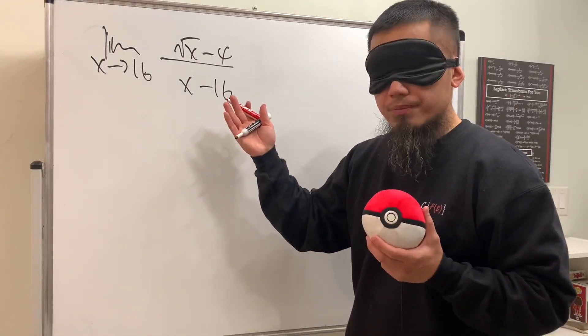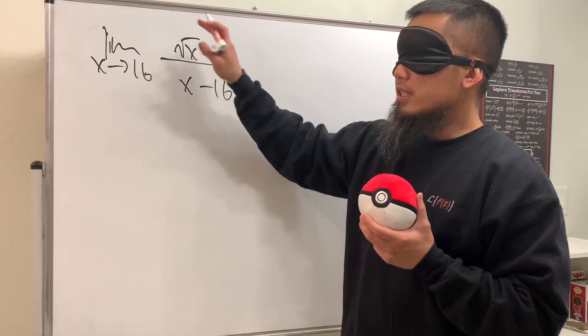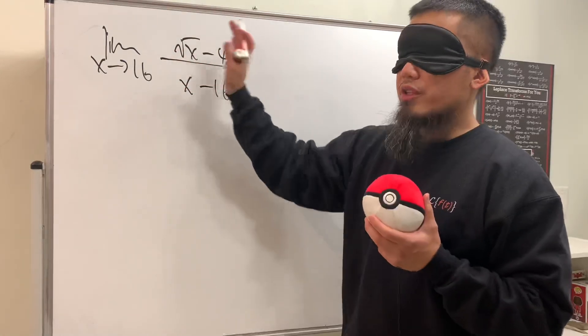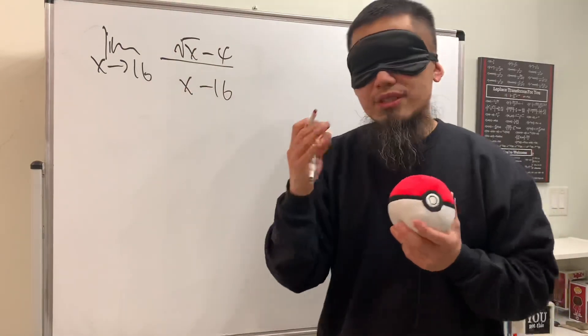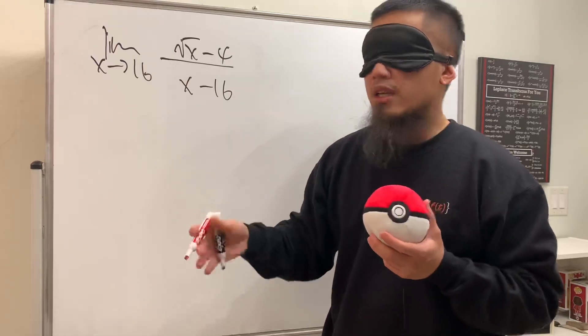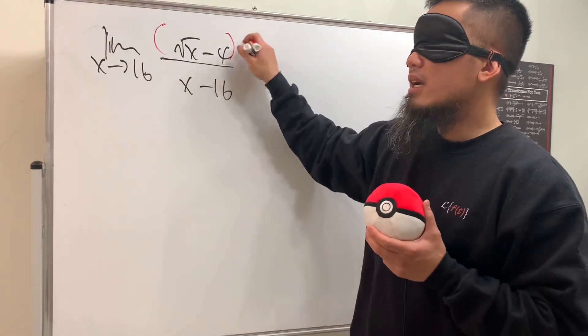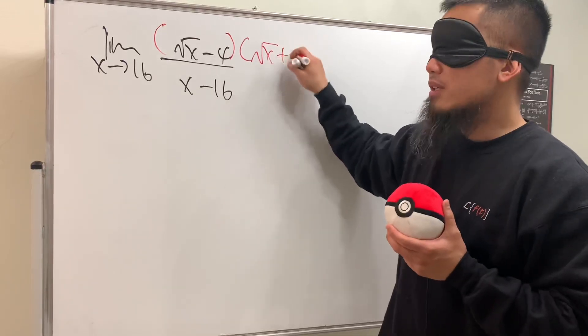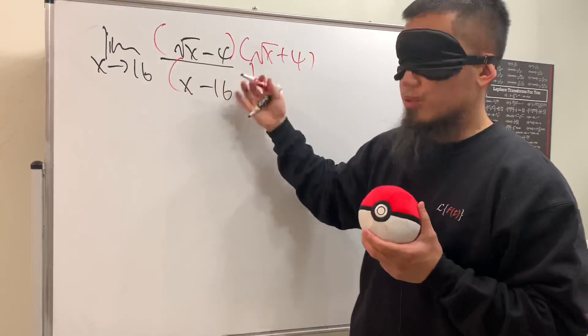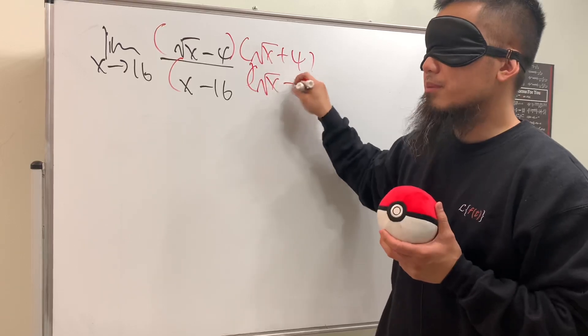Well this is the work that we can do. You see that we have a rational expression here with square root, so it's a good idea to use the conjugate. So right here on the top I'm going to multiply this by square root of x plus 4, and then let's of course do the same thing, that's square root of x plus 4.